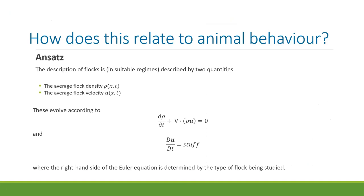How is fluid mechanics related to animal behavior? The description of flocks of animals in suitable regimes involves two quantities: the average flock density and the average flock velocity. These two quantities evolve according to the mass continuity equation — animals are neither created nor destroyed — as well as an Euler equation where the right-hand side is to be determined. Finding that right-hand side for a given flock is the main goal.